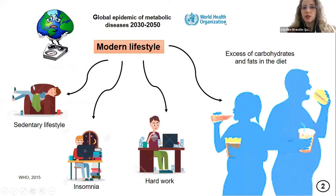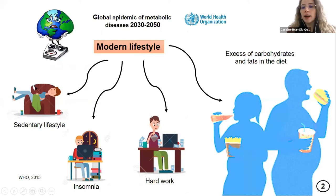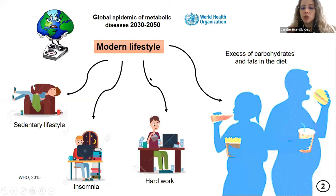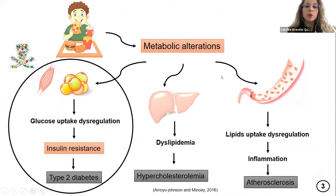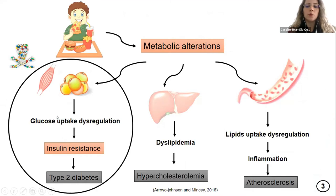The World Health Organization predicts a global epidemic of metabolic disease for the next 30 years. This is because our modern lifestyle — like sedentary lifestyle, sleep problems, and hard work — combined with excess carbohydrates and fat in the diet could alter our metabolism and induce metabolic alterations, mainly in peripheral tissues like muscle, fat, and liver. With this excess of carbohydrates and fat in our diets nowadays, we could have metabolic alterations begin in muscle and fat with a dysregulation in glucose uptake.